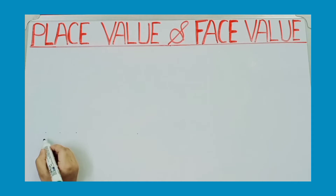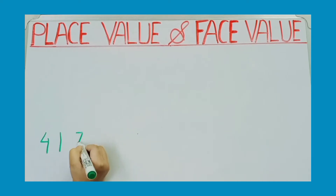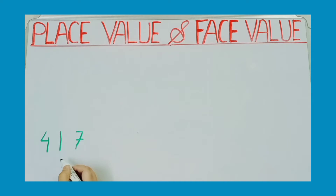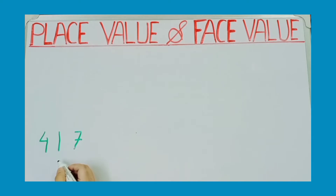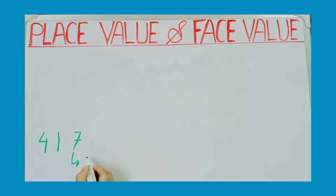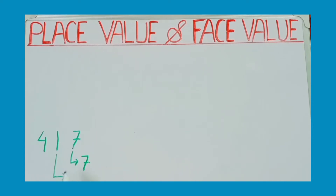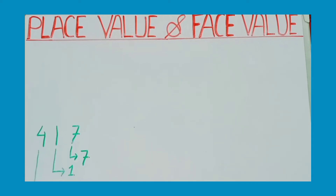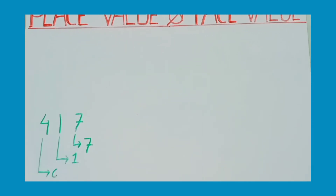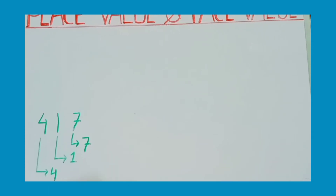Let us see one example. Here we have the number 470. As we know, the face value of a digit is the digit itself. So, the face value of 7 is the digit itself — that means 7. The face value of 1 is 1, and the face value of 4 is 4.